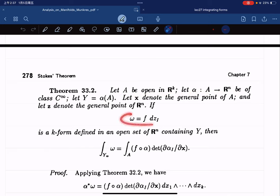So if omega is some F dz_I, it's a k-form in R^n, then the integral. Right? So the k-form in R^n. Then this is like, we go to this.